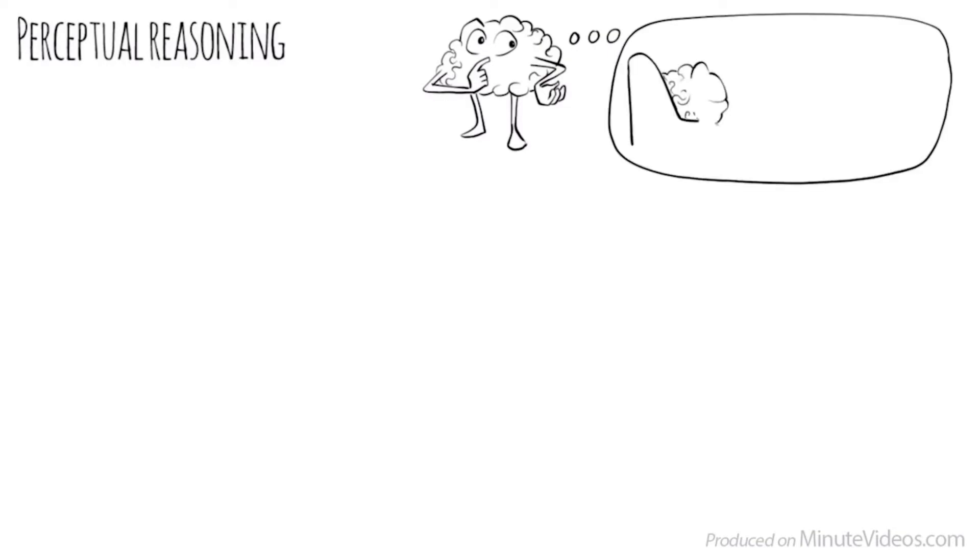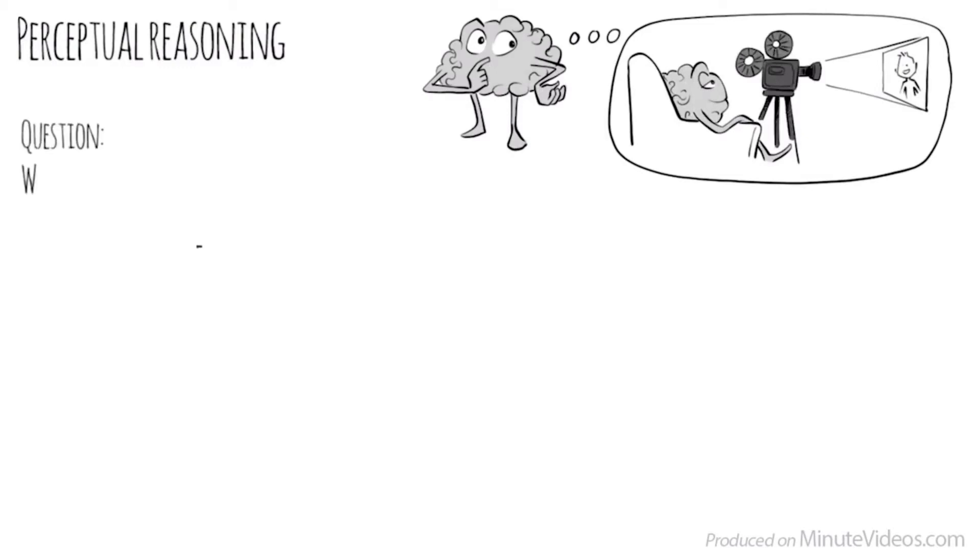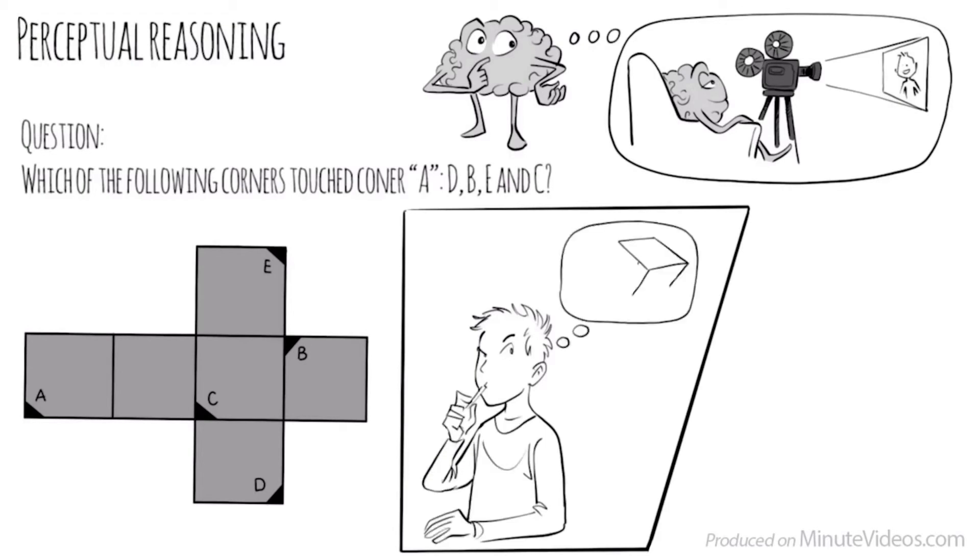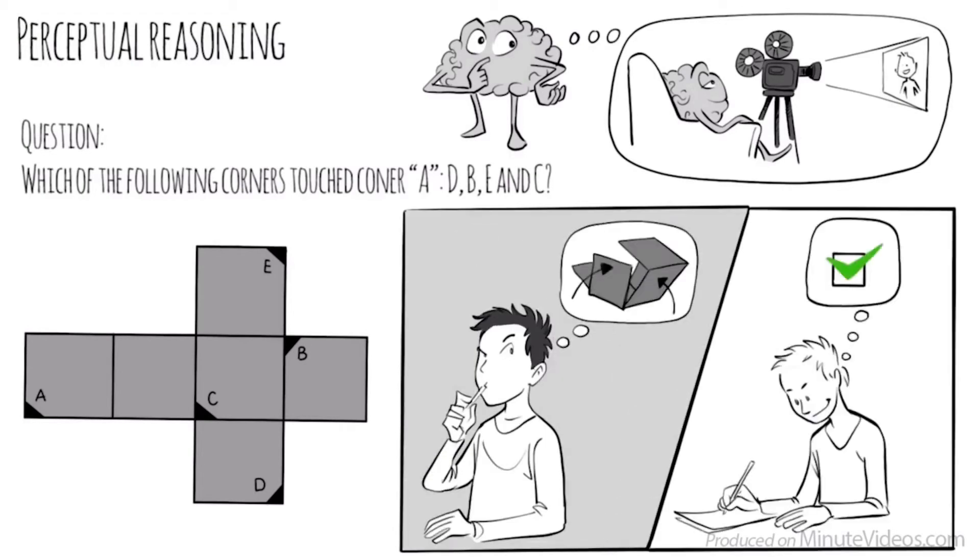I turned the first page over. It read the following: Perceptual reasoning is the ability to think and reason with visual information. It is the ability to see what is being asked, and to organize information in our heads through images. The first question was, When folded into a cube, which of the following corners would touch corner A? D, B, E, or C? I tried to fold the cube in my head, and yeah, it worked. It must be D.